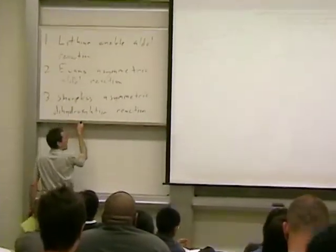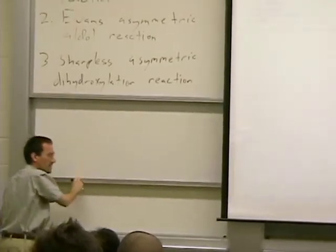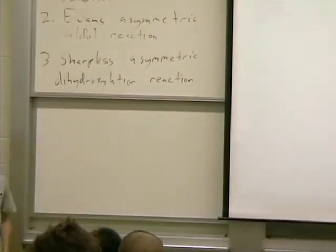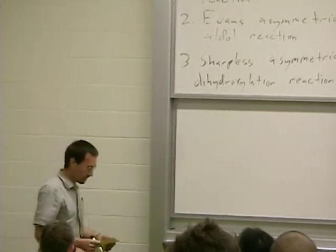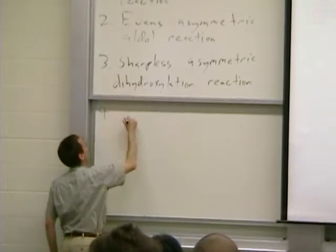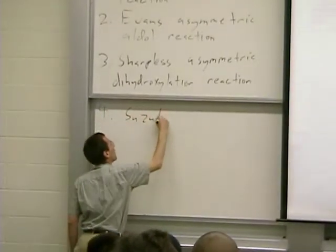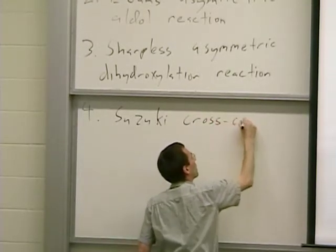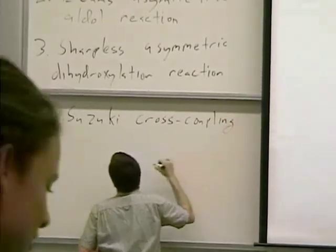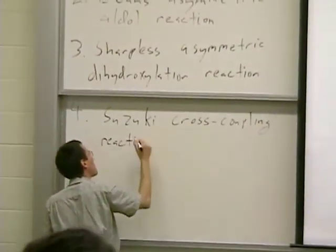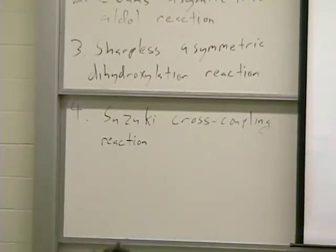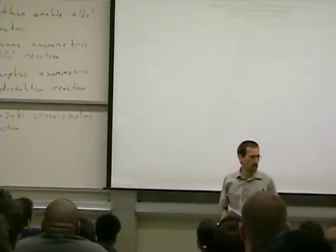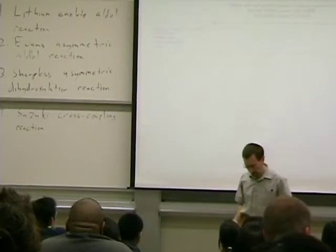Sharpless asymmetric dihydroxylation reaction uses a metal, osmium, in the reaction. We're going to continue on this notion of use of metals in synthesis and metal catalysis in the Suzuki cross coupling reaction which is going to be our fourth experiment. This reaction is going to introduce us to the idea of metal catalysis in forming carbon-carbon bonds and the very rudimentary steps in organometallic reactions.